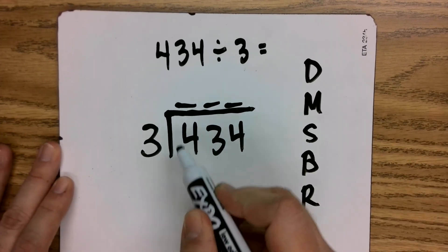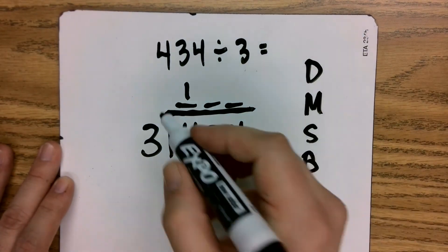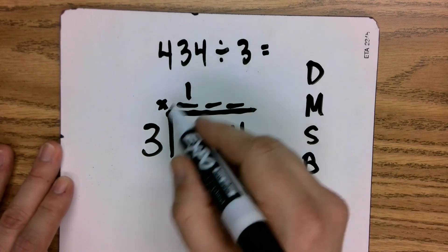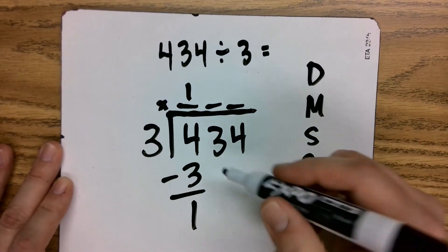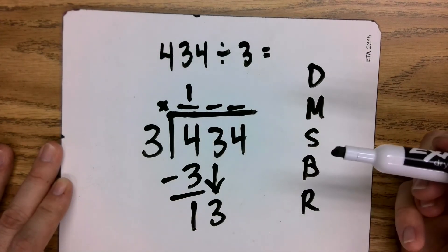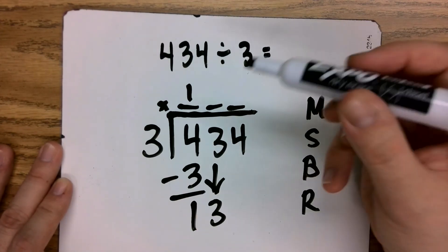So does 3 go into 4? Yes, it does. It goes in one time, meaning I can count to 3 once if I have four fingers. 1 times 3 is 3. Subtract, I get 1. And I will bring down the 3 here in the tens place. 3 goes into 13 how many times?